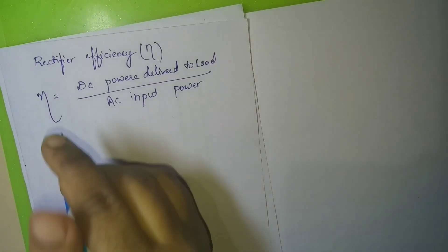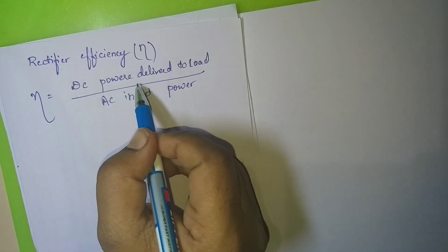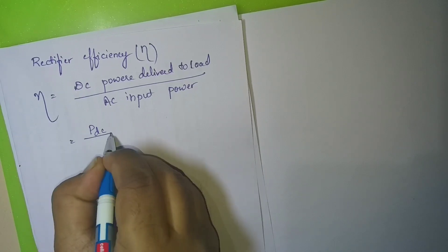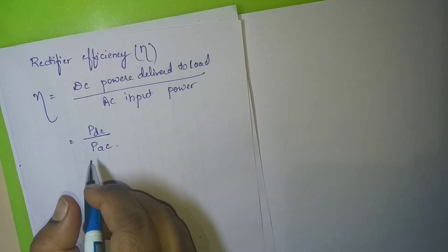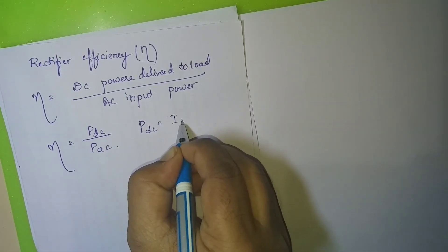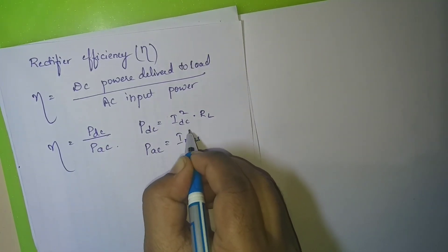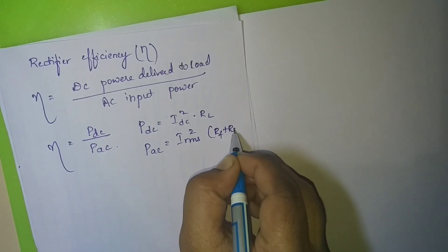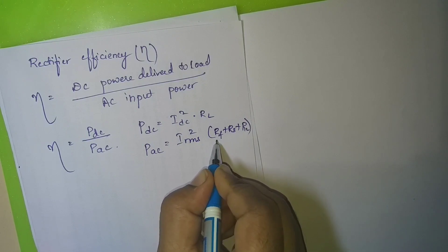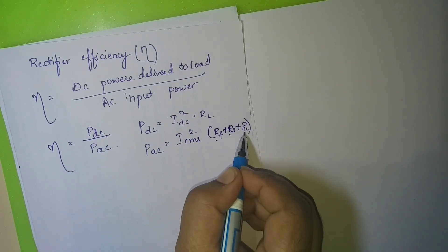The next topic is rectifier efficiency. The efficiency of the rectifier is defined as DC power delivered to the load divided by the AC input power — that is PDC divided by PAC. PDC equals IDC squared times RL, and PAC equals IRMS squared times (RF plus RS plus RL), where RF is the forward resistance of the diode and RS is the secondary winding resistance.